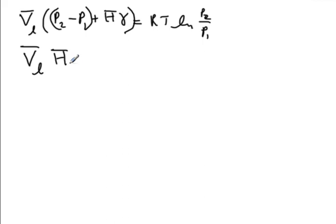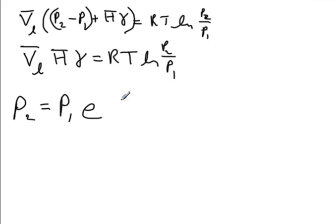So we make that assumption. We are just left with the molar volume of the liquid, the Laplace pressure. That's equal to RT log of P2 over P1. And at that point, we can solve for the new vapor pressure of P2. So we divide by RT and take an exponential. So we get P2 is equal to P1. And then we have an exponential that's proportional to the Laplace pressure times the molar volume of the liquid divided by RT. And this is called the Kelvin equation.